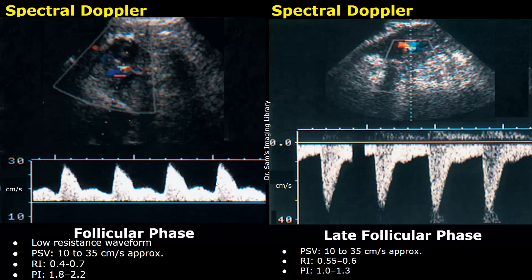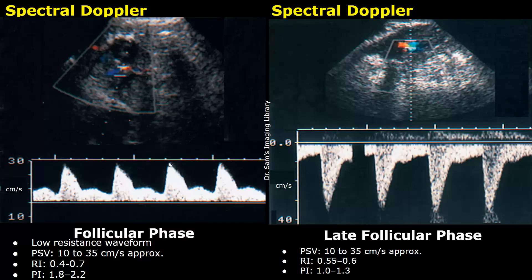The developing follicles require good blood supply. The peak systolic velocity (PSV) is usually between 10 to 35 centimeters per second approximately. The value of the resistive index (RI) is usually between 0.4 to 0.7. The pulsatility index (PI) can be between 1.8 to 2.2.